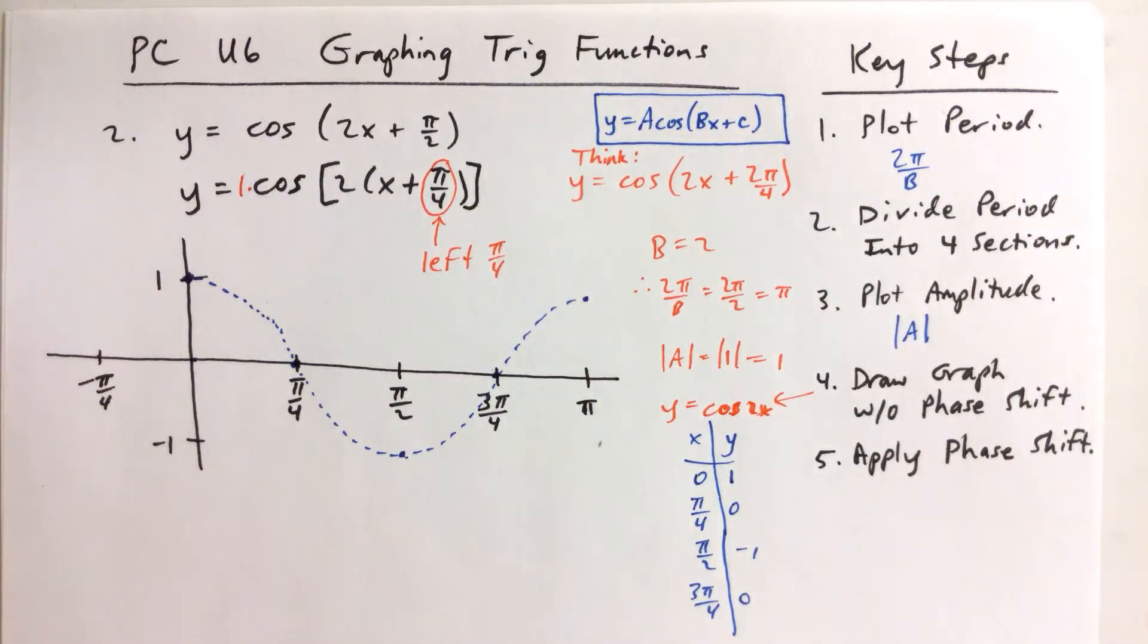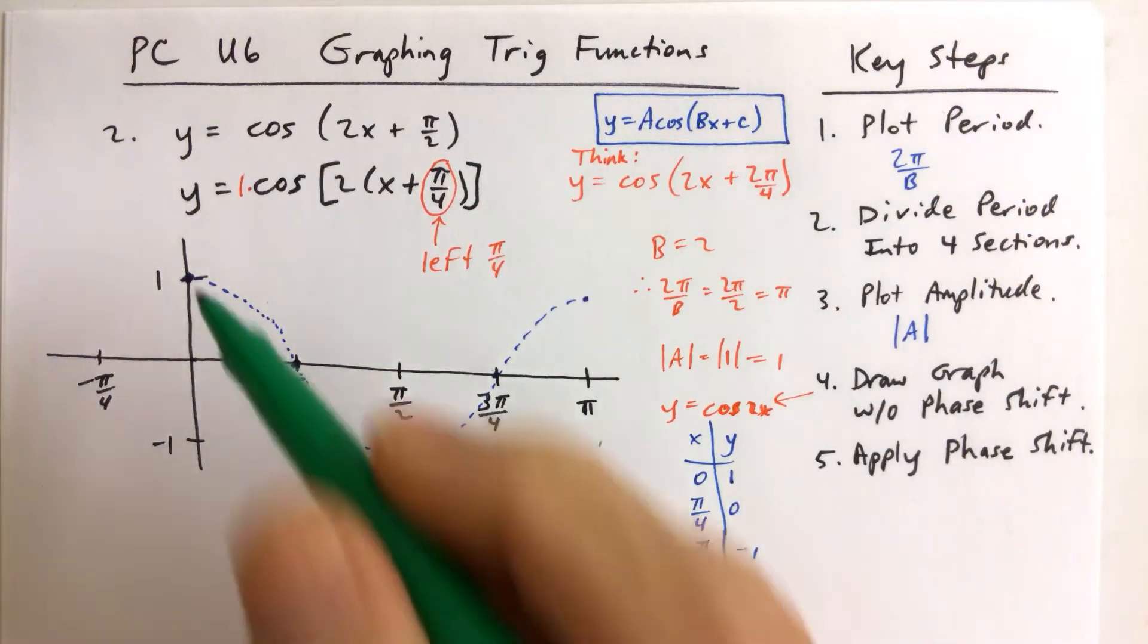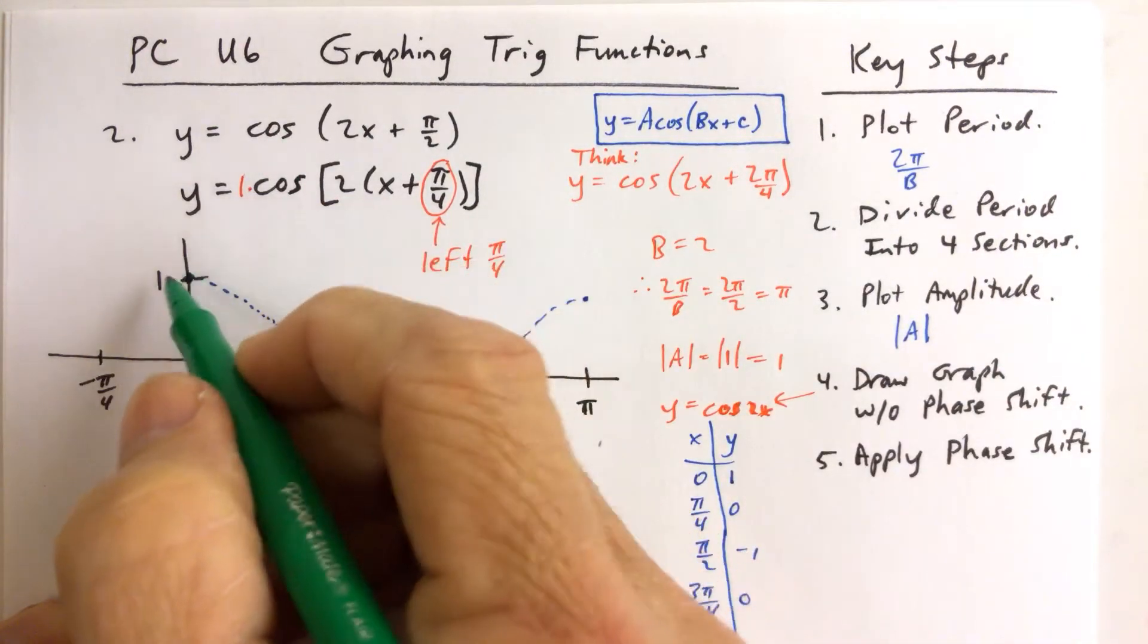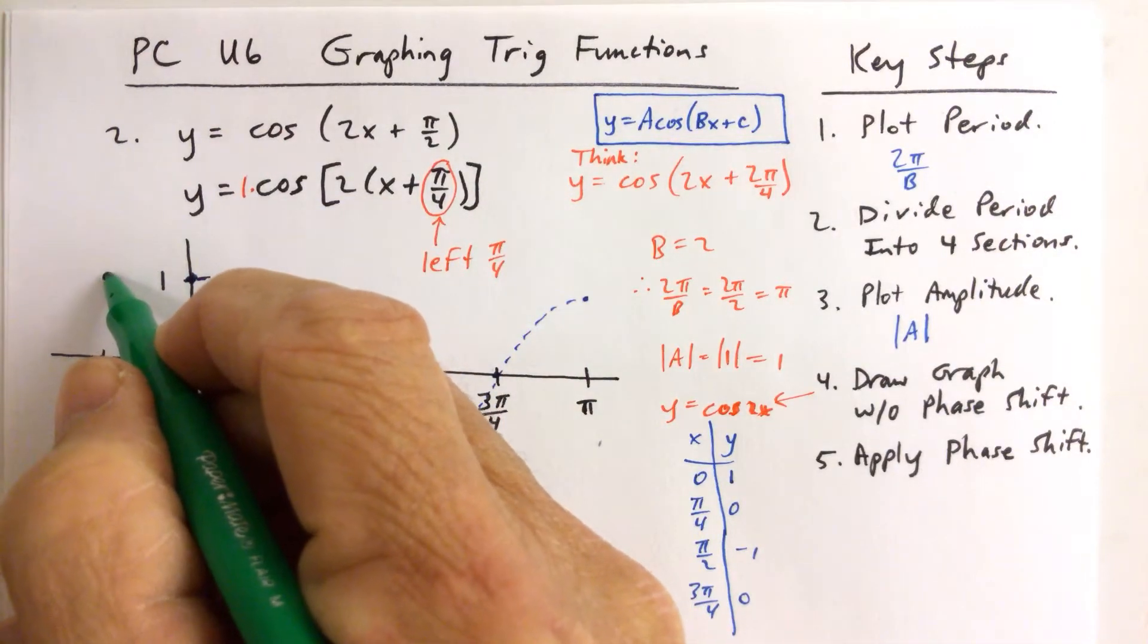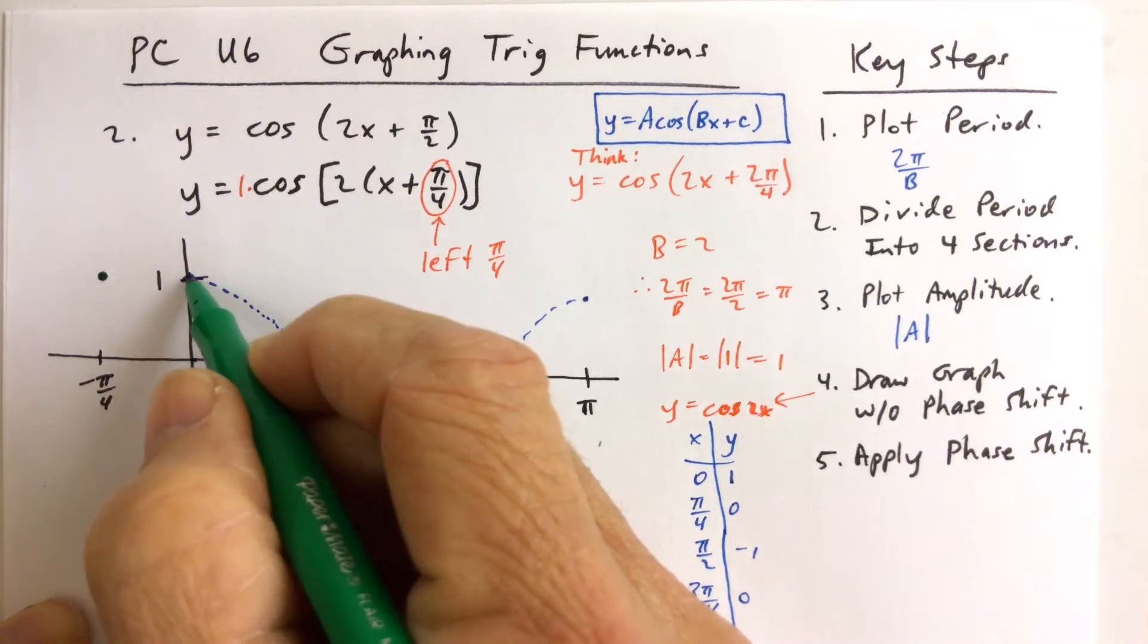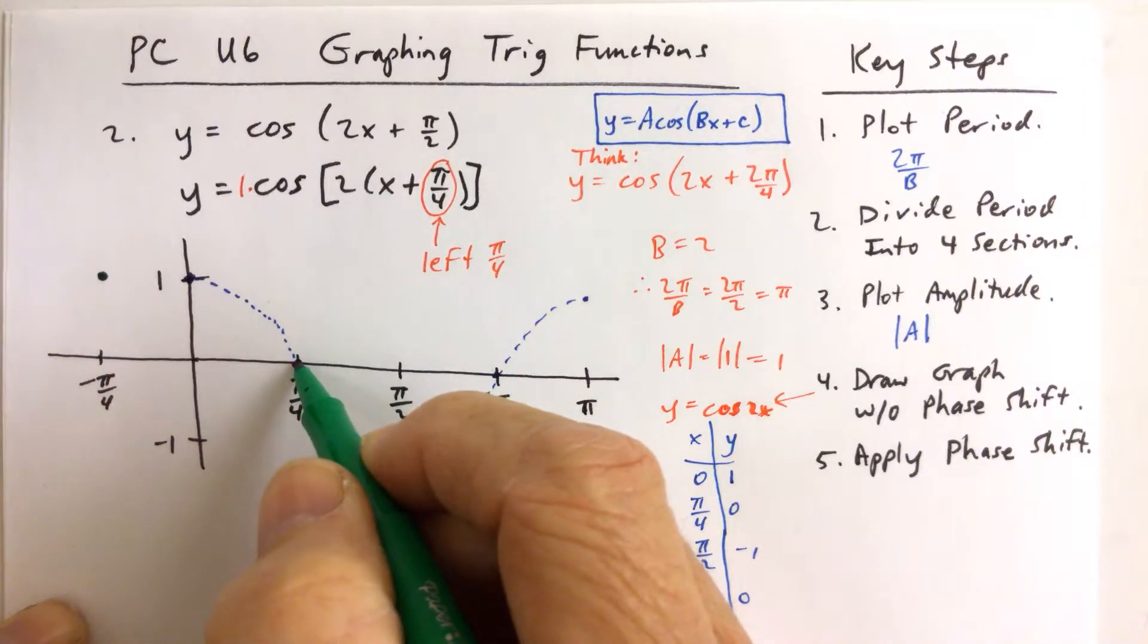If we go left pi over 4 radians, it means that every one of these five points is going to move to the left pi over 4 radians. So this point here, which is at 0, moves to the left pi over 4.